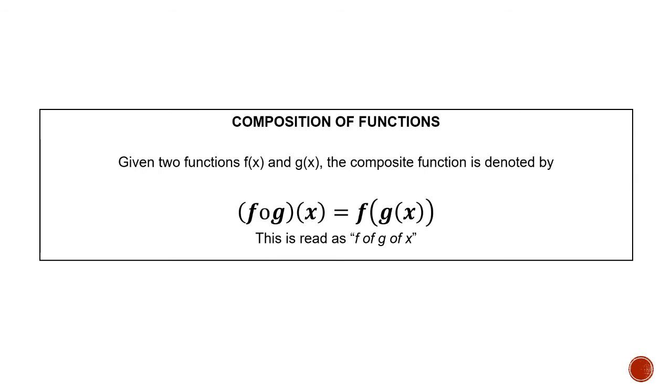Composition is simply the process of substituting a function to another function. You can also substitute a function to itself to make a new function. The notation used in composition is this one. This is not read as Fog x, but it is read as f of g of x. This simply means that you're going to substitute the function g to the function f.